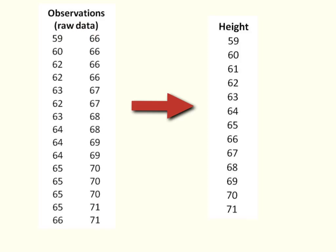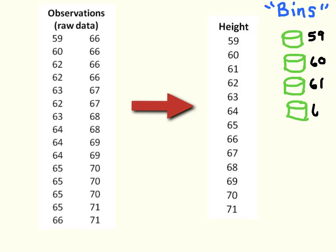The way we create our frequency distribution is by creating a set of what are called bins, and the bins represent the possible values in the data set. You can just imagine them as little containers for each value. When you're making the frequency distribution, you start with this set of bins.